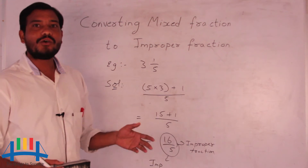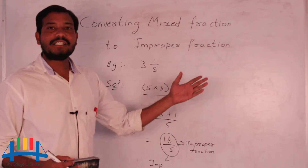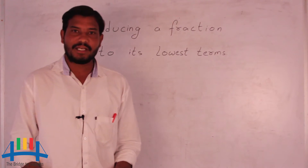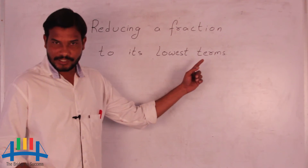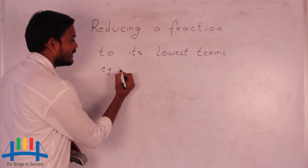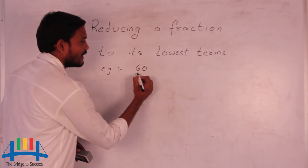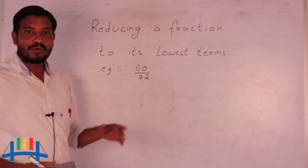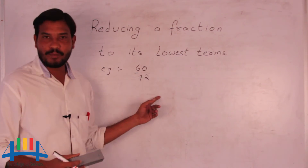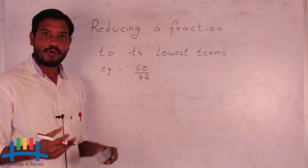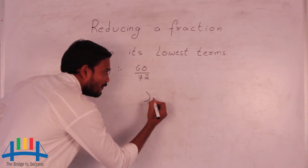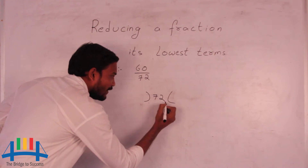Now we will go to the next topic: how to reduce a fraction to its lowest terms. I will consider the example 60 by 72. To convert it to the lowest term, first we should find the HCF of both the numerator and denominator. So we find the HCF of 60 and 72. We divide 72 by 60: 60 goes once giving 60, and the remainder is 12.